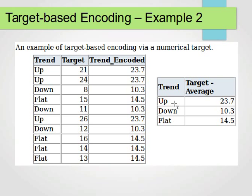We sum up. For example, for up, we add 21 plus 24 plus 26, then divide by 3. For down, we do 8 plus 11 plus 12, and divide by 3. For flat, 15 plus 16 plus 14 plus 13, divide by 4, the count, and then the result would be that. These are the averages, and now we replace that by the average. This is the encoded value of the trend variable, which is done with respect to a target.